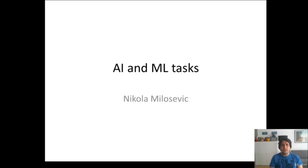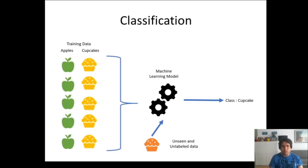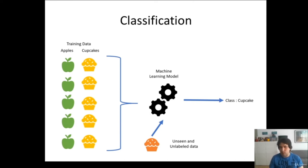Hello, my name is Nikola Milošević and in this video we will look into AI and machine learning tasks. One of the first tasks we talked about in the previous lecture is classification. A lot of things can be modeled as a classification — for example, apples and cupcakes as training data. Classification is usually a supervised learning task requiring labeled data. It can be applied to classifying documents as positive or negative, whether they are about a certain topic, or whether an image contains a certain object like a cat or a car.